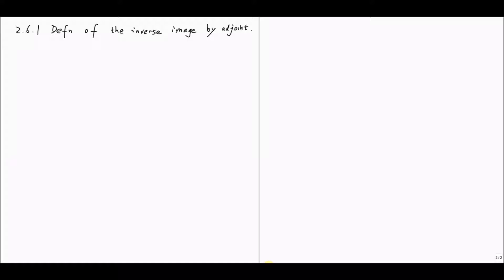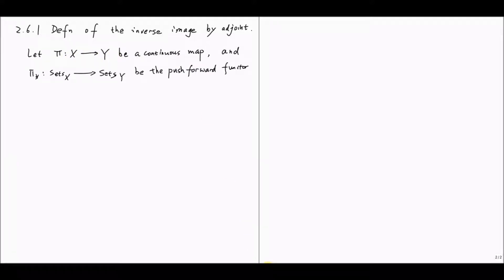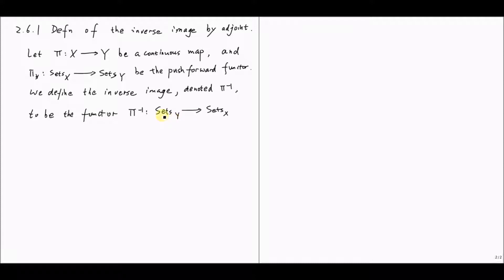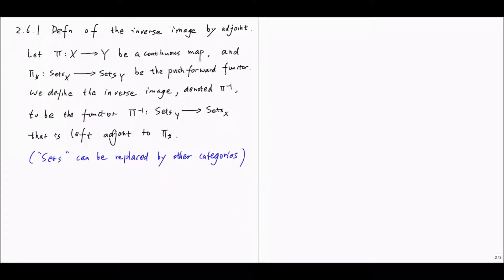Now let's look at the first definition of the inverse image sheaf. Let π from X to Y be a continuous map, and π_* from the sheaves of sets over X to the sheaves of sets over Y be the push-forward functor. Then we define the inverse image, denoted π inverse, to be the functor from the category of sheaves of sets over Y to the category of sheaves of sets over X, that is left adjoint to π_*. The category of sets can actually be replaced by other categories, like the category of abelian groups.